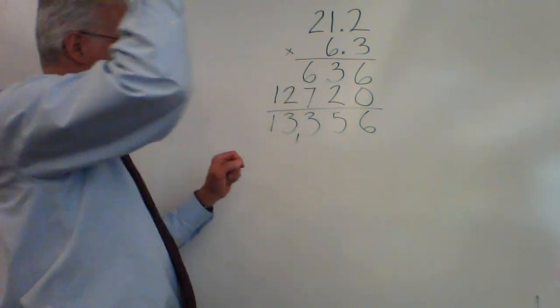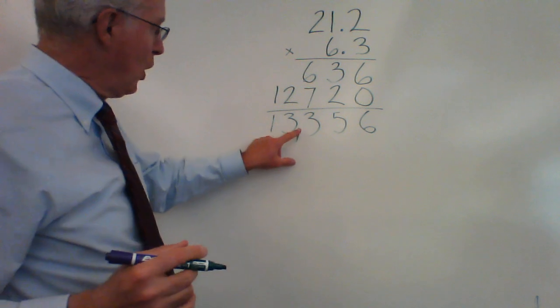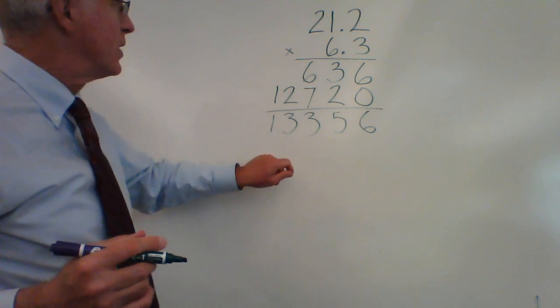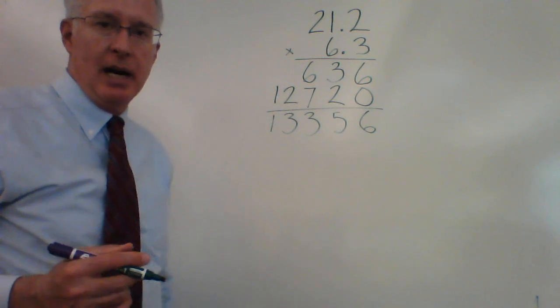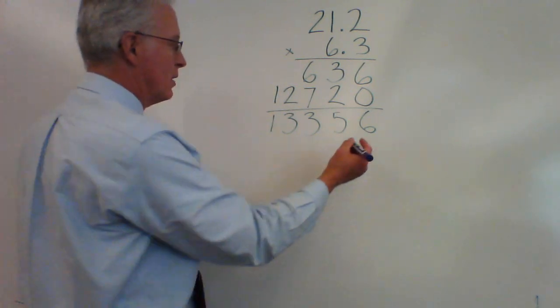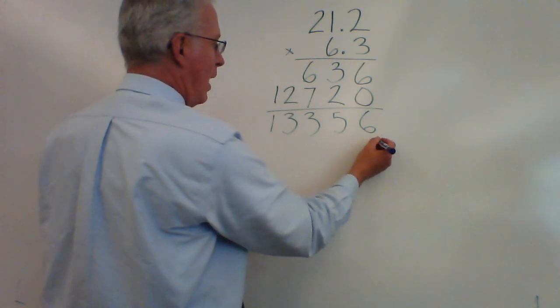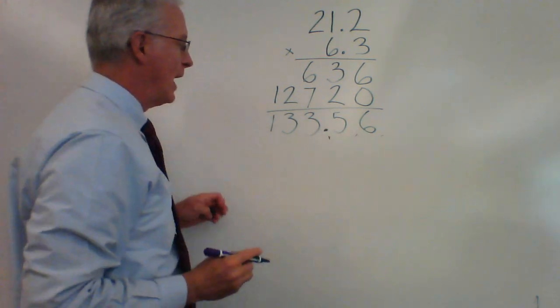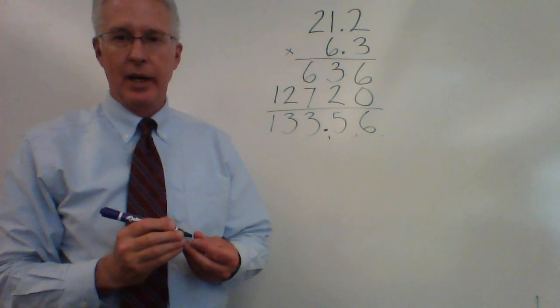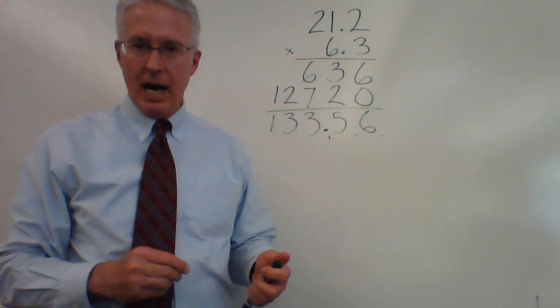Remember, we're tempted to just go, but then we remember, oh, the decimal points. We've got 1, 2 digits behind the decimal point. So we count over 1, 2. And there's our answer. 133.56.